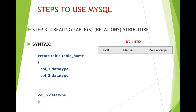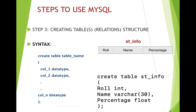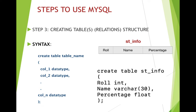Think of it like drawing margins to make a table before writing the content — for example, before writing the difference between living and non-living things, you first draw the table structure. In the third step, we will first make the structure of the table. The structure will contain the table name, which is 'stinfo' in this case, and the name of the columns: role number, name, and percentage. As per the syntax, we will write: CREATE TABLE stinfo, then open a bracket and write the column names with their data types.